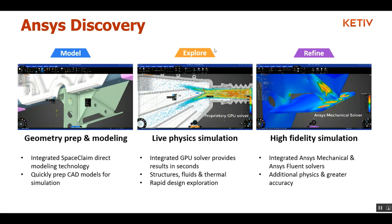The next and one of the most important stages is the explore stage. In the explore stage, you can use the GPU for performing real-time simulations or live physics simulations. Any changes you make to your design or boundary conditions will be immediately seen in those real-time simulation results, giving you more scope for rapid design exploration so you can make the changes to get your desired quantities of interest.